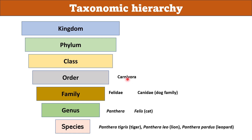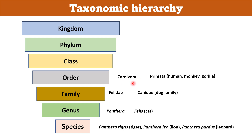Certain similar orders come in the same class. Order Carnivora and order Primata are different — Primata includes humans, monkeys, gorillas, etc. But members of Carnivora and Primata have some similarities, hence they come in the same class Mammalia.